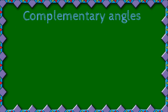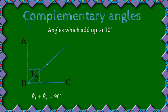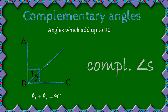Then we have complementary angles. Complementary angles add up to 90 degrees. To remember this, draw a line through the C, which forms a 9, helping us remember they add up to 90. Here's an example: B1 and B2 together add up to 90 degrees. If you use complementary angles in a question, that is the reason you state.